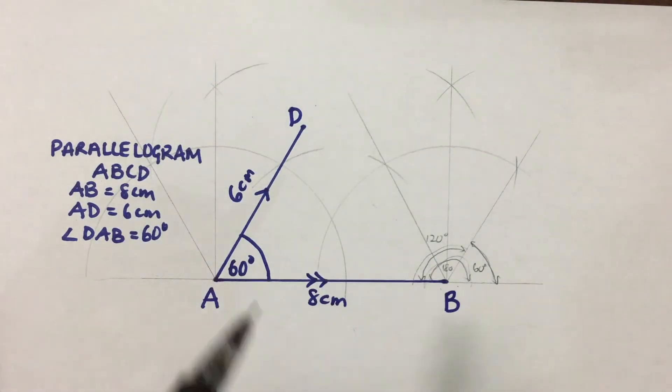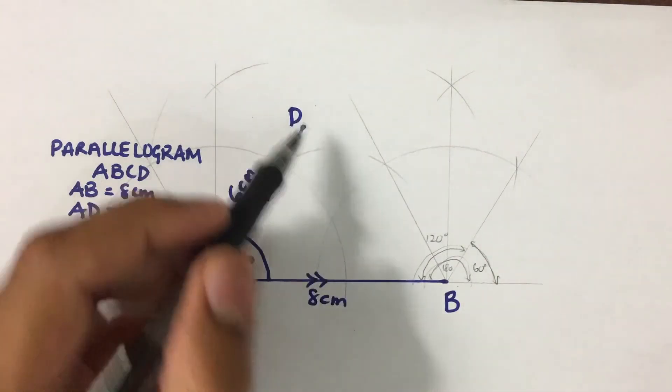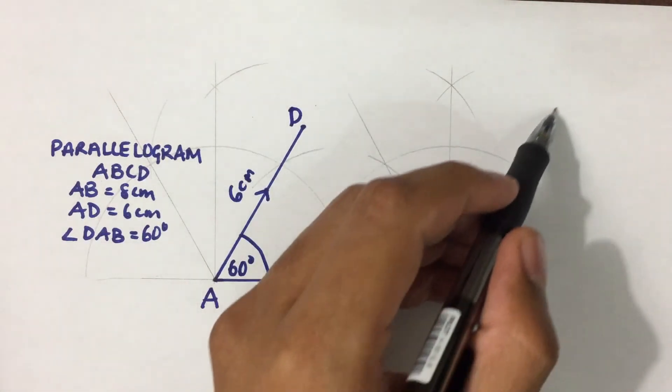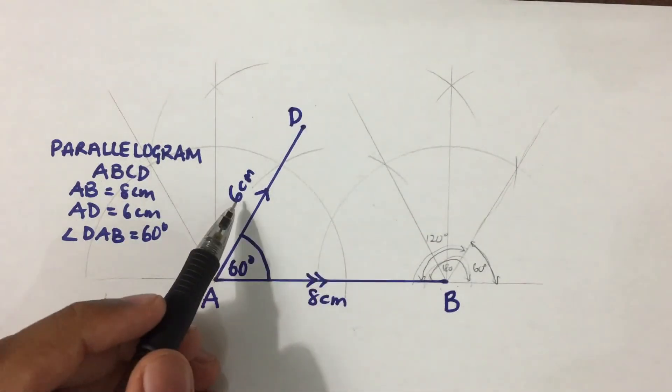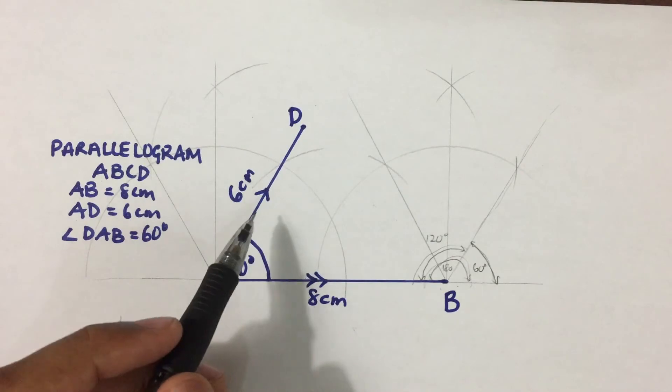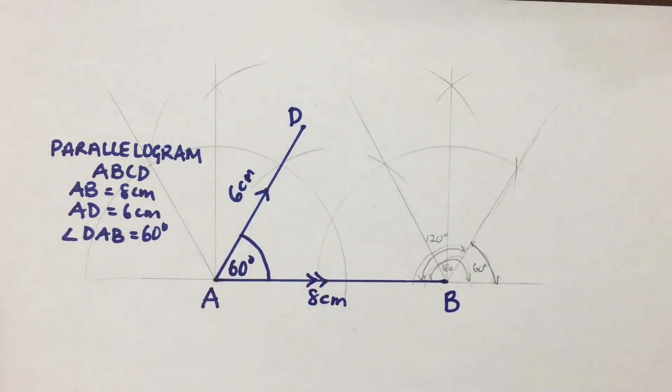So then, a line that is parallel to AD would be this line here. And we know that for a parallelogram, the opposite sides are equal.